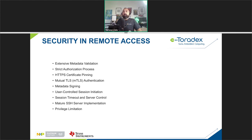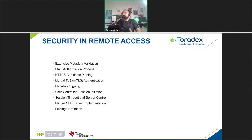Third: HTTPS certificate pinning. Our remote access client only accepts a specific pinned HTTPS certificate. By pinning the certificate the client ensures it only communicates with authorized servers, preventing potential man-in-the-middle attacks. Fourth: network mutual TLS authentication. Our client requires the device to authenticate using mutual TLS before obtaining a session metadata from the server, ensuring that both the client and the server verify each other's identities — adding an extra layer of security. The metadata is signed, and as mentioned you can even sign with your offline key.